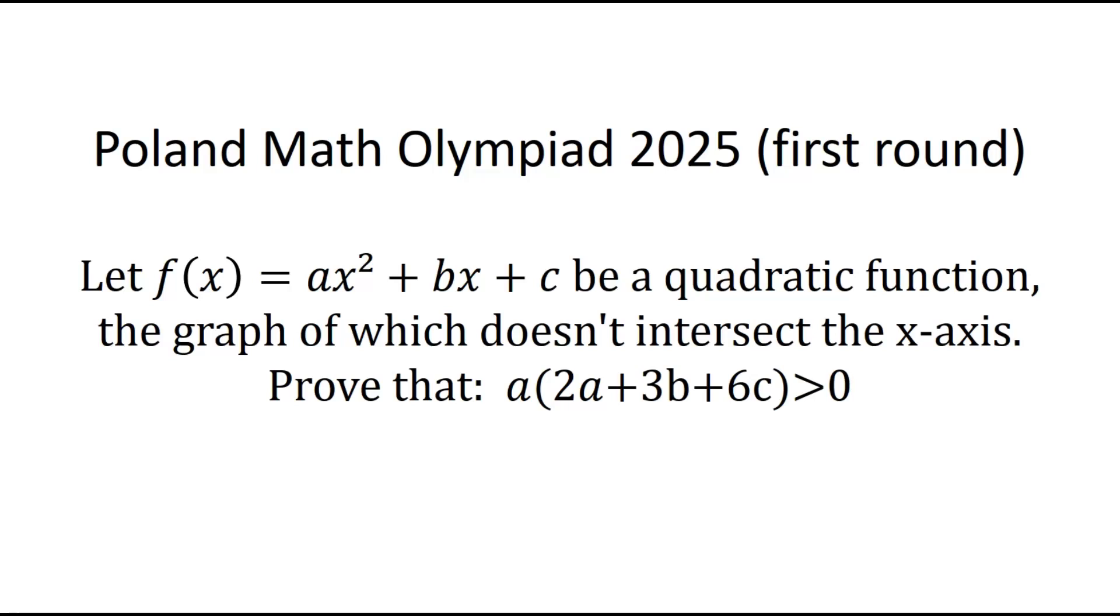So the problem says, let f(x) be a quadratic function equal to ax² + bx + c, the graph of which doesn't intersect the x-axis. Prove that a(2a + 3b + 6c) > 0.